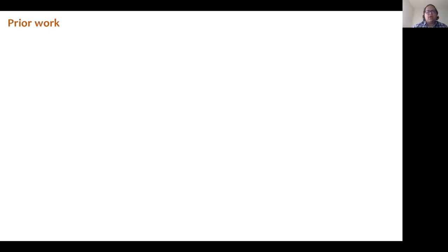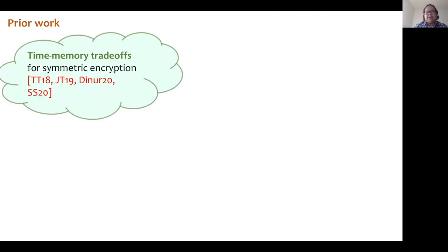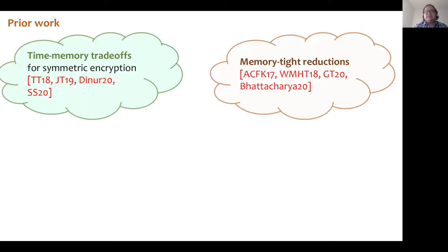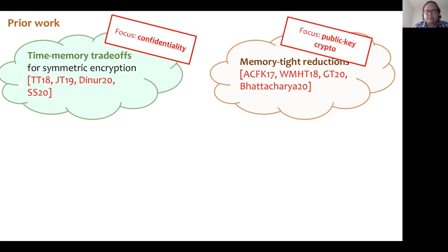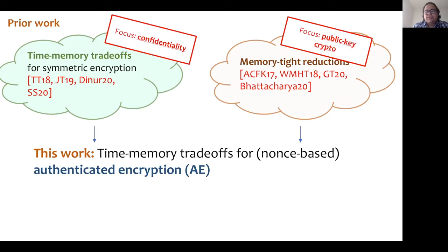Prior work has generally taken one of two approaches. The first gives time-memory tradeoffs for symmetric encryption, while the second focuses on either giving or proving impossibility of memory tradeoffs. The former approach has mainly focused on confidentiality of encryption, while the latter has focused on public cryptography. In this work, we shall combine elements from both lines of work for the first time.